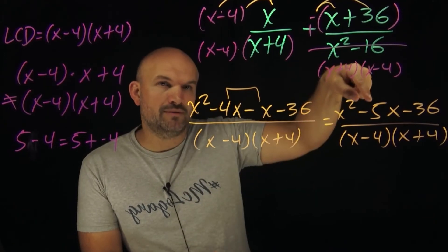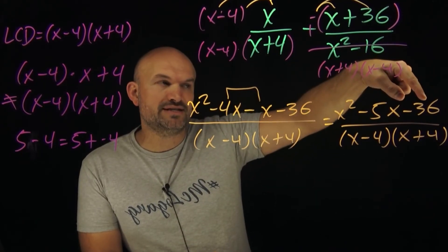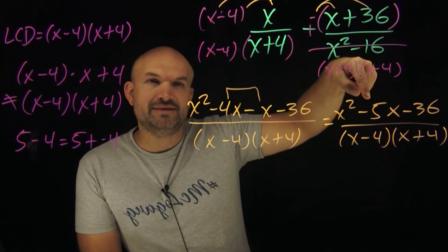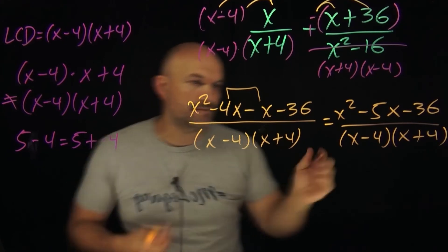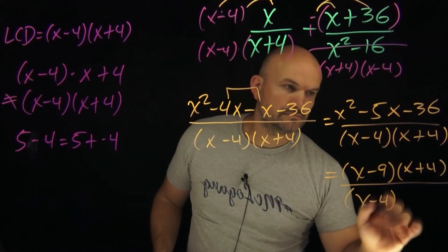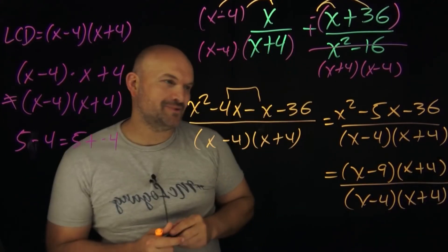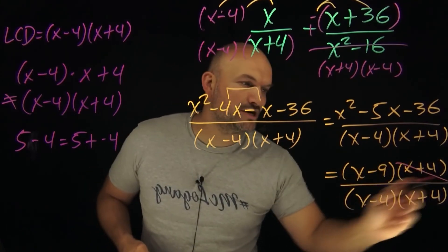So that's what I'm looking for. I'm looking for what two numbers multiply to give me negative 36, and then add to give me negative 5. So right now, I can think that's going to be a negative 9 and a positive 4. And voila, look what happens, ladies and gentlemen. We can now go ahead and divide out our terms.